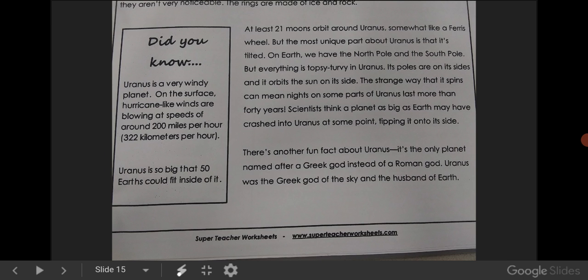Uranus is so big that 50 Earths could fit inside of it. At least 21 moons orbit around Uranus, somewhat like a ferris wheel.